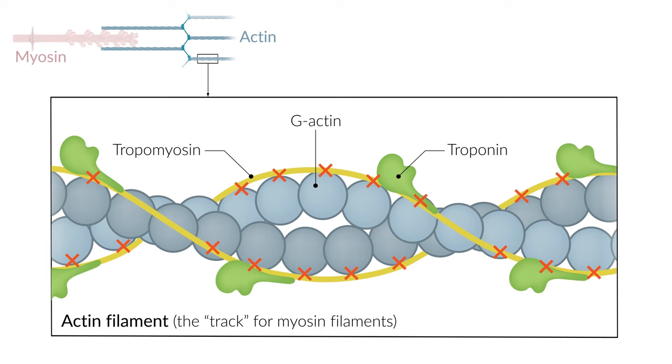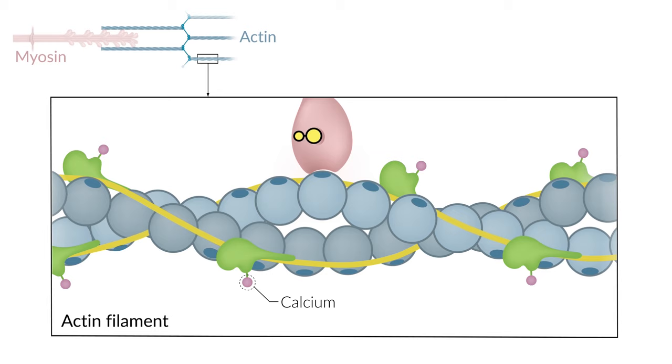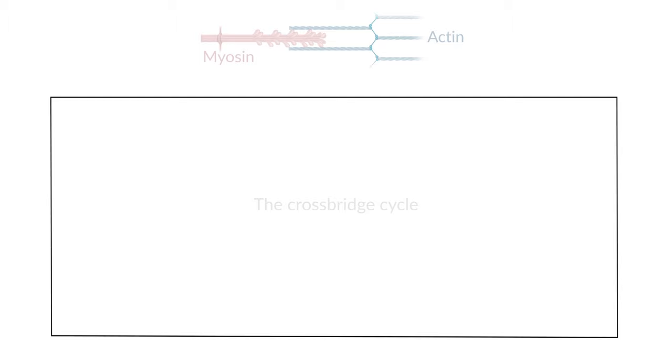During contraction, these regulatory proteins are modified by calcium binding so that actin and myosin can interact. This process is termed the cross-bridge cycle. It occurs in the following steps.